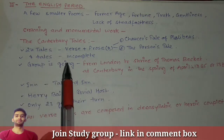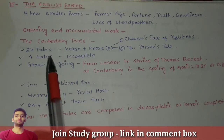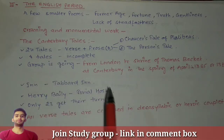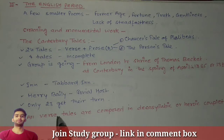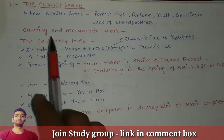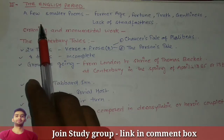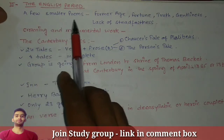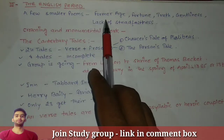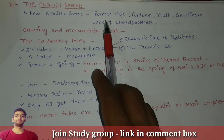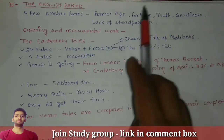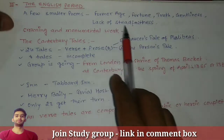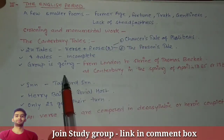The English period was the most productive period of Chaucer's literary career. A few smaller poems from this period include 'Former Age,' 'Fortune,' 'Truth,' 'Gentleness,' and 'Lack of Steadfastness.'